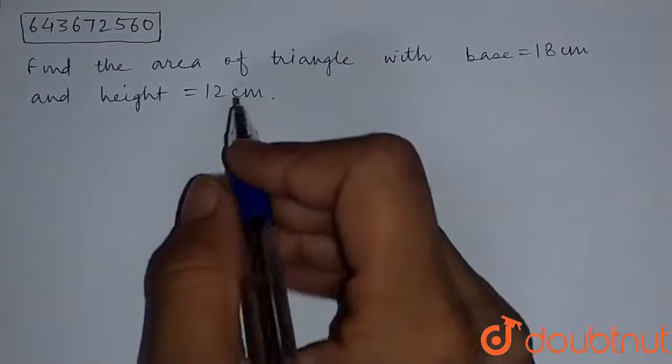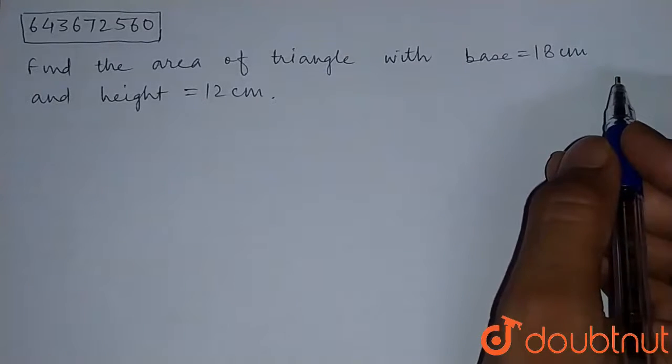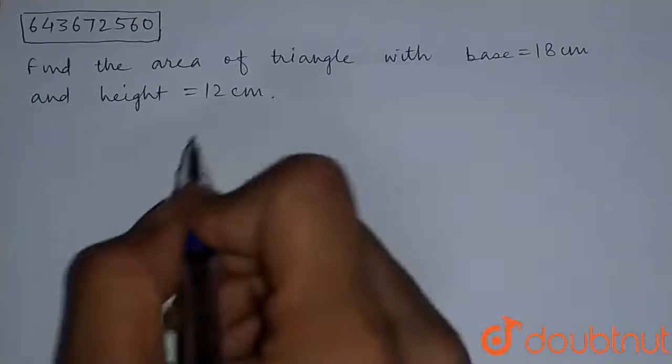So today's question is: find the area of triangle with base equal to 18 cm and height equal to 12 cm.